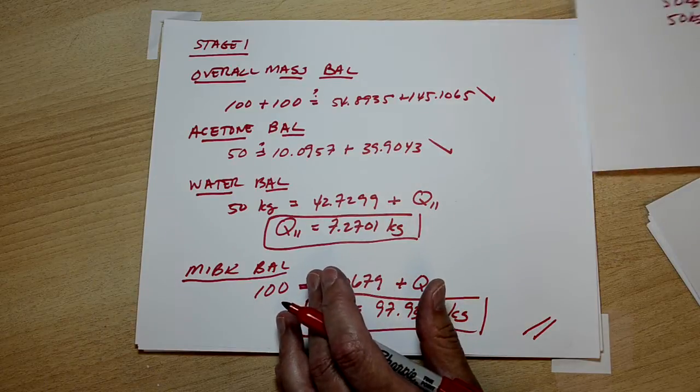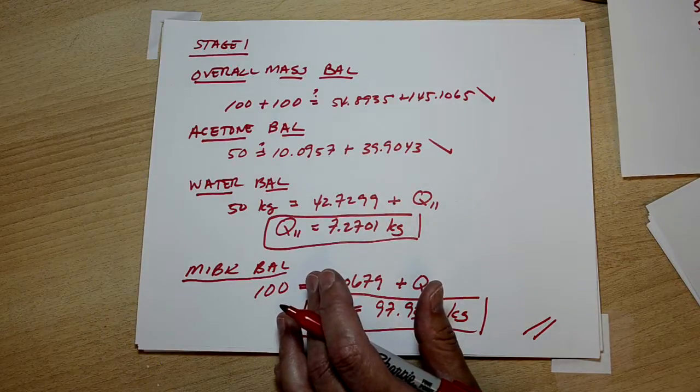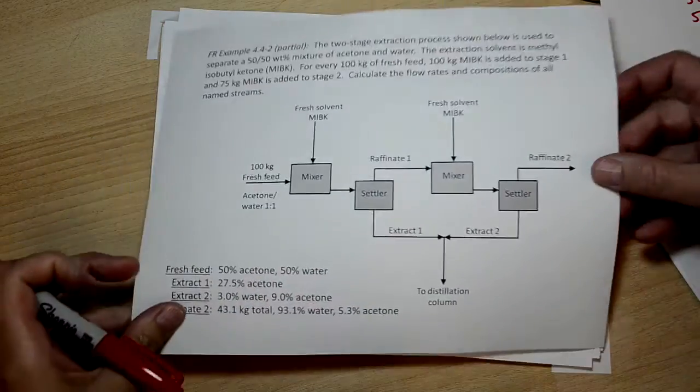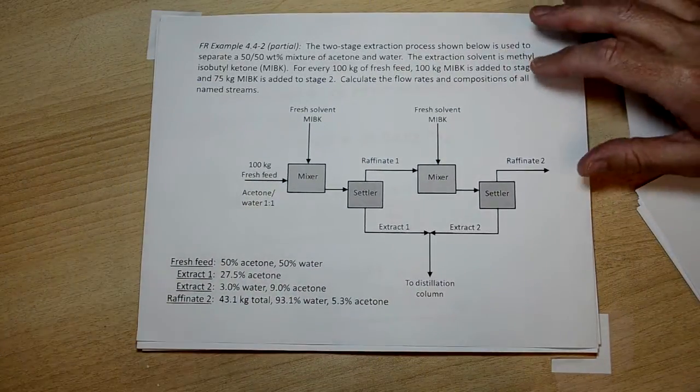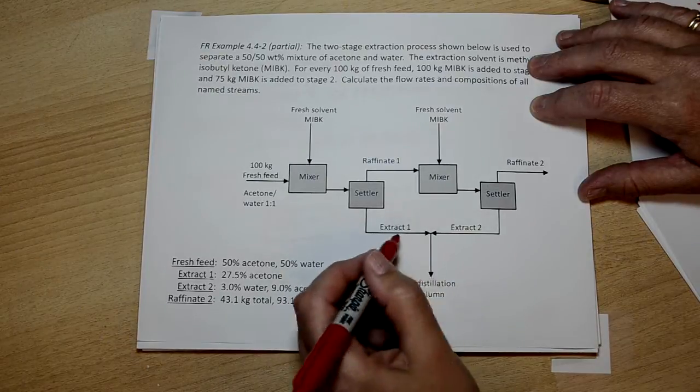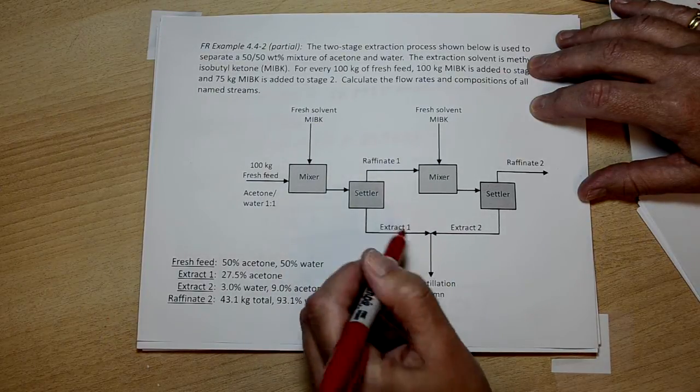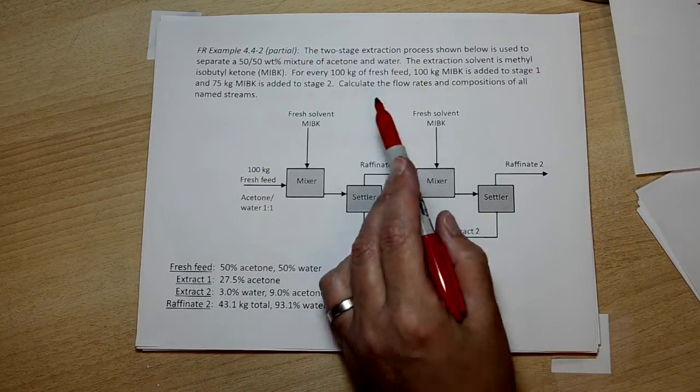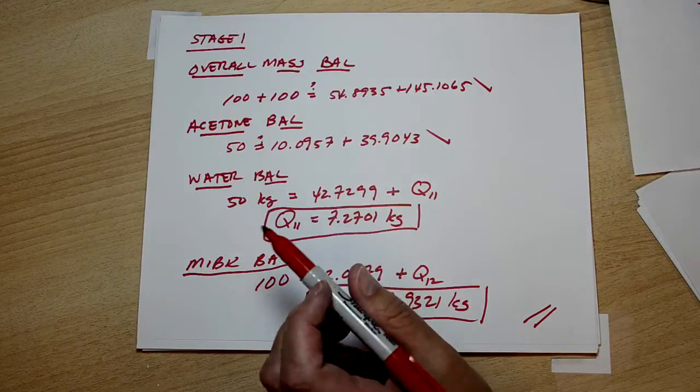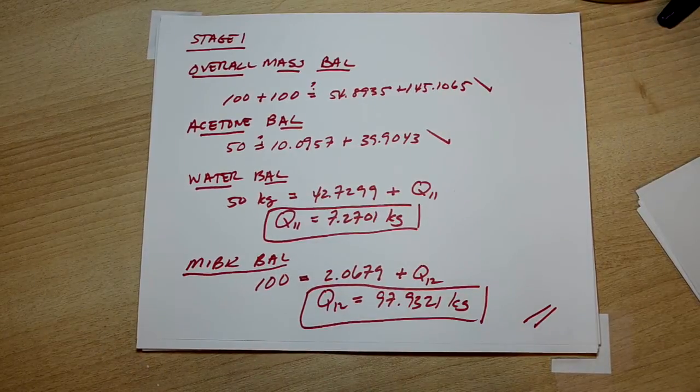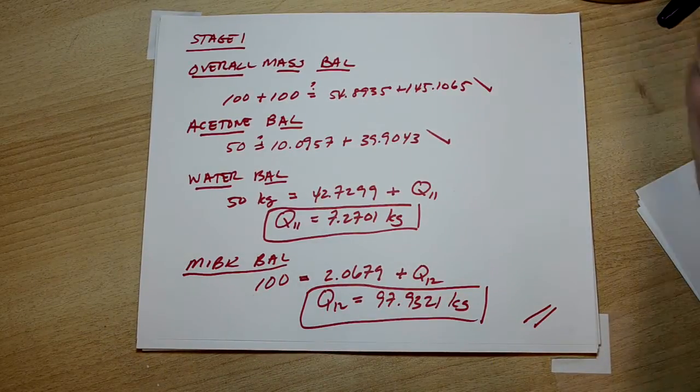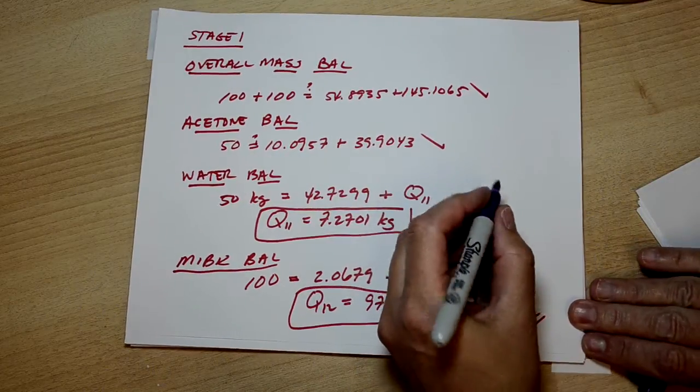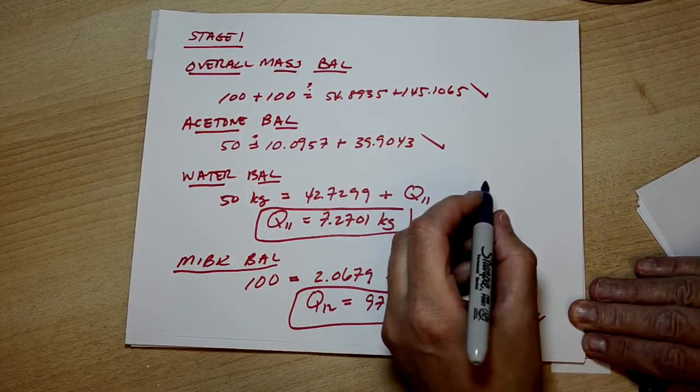Now we've actually finished. These are all of the units in the process. We've calculated all the streams, the extract streams we were missing, the internal raffinate stream that we were missing. We know all the mass flow rates. In order to report our final answers, we have one last step, which is to report the correct number of sig figs and compositions, mass compositions.